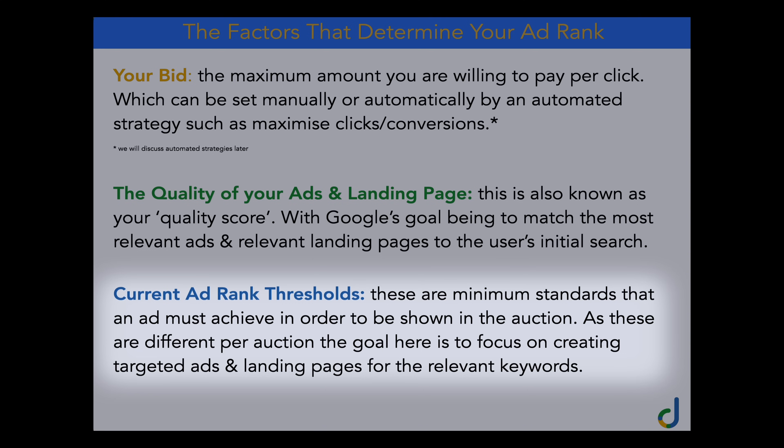The next factor is called current ad rank thresholds. These are the minimum standards an ad must reach in order to be shown in the auction. There might be higher thresholds for different industries depending on what your competitors are doing. If you've got better ads and landing pages than your competitors, that's a positive in your favor. Alternatively, if competitors have better quality ads and landing pages, you're going to have to pay more to get relevant clicks.